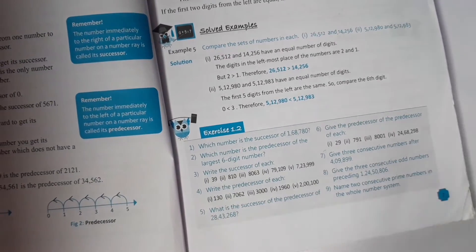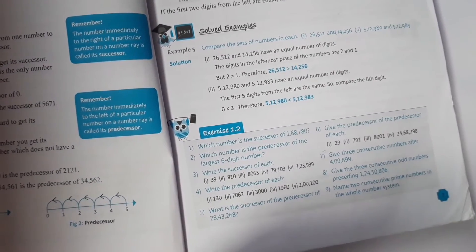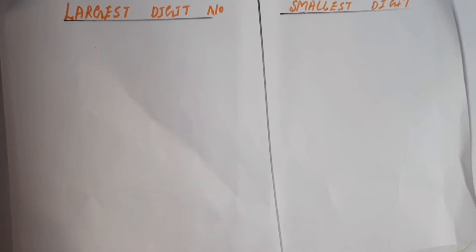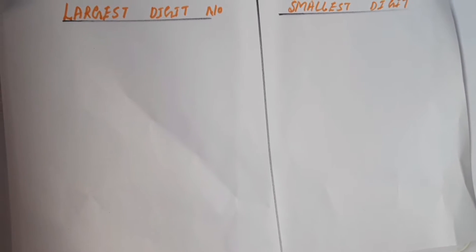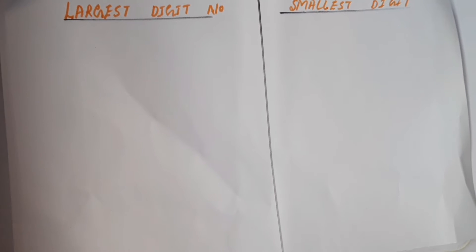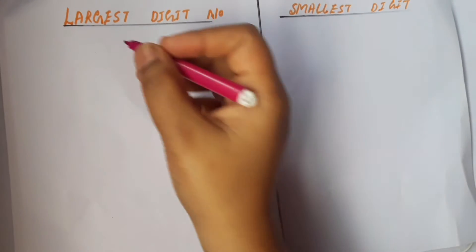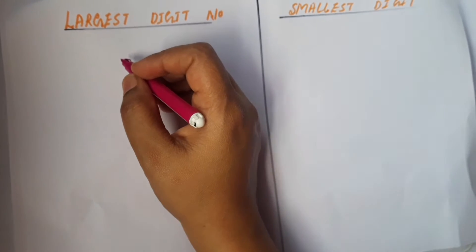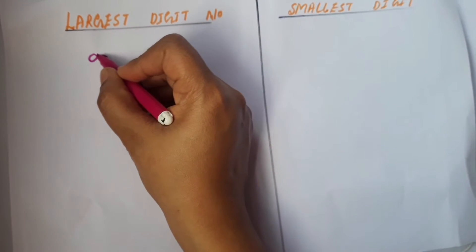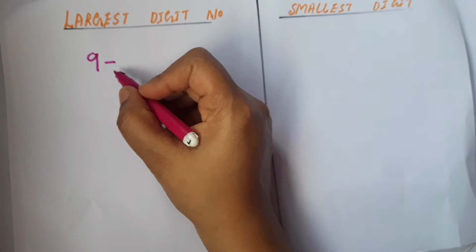Now, we have to check the largest six-digit number. To find the largest or greatest six-digit number, first we have to know how to write the largest digit and smallest digit. For example, the largest nine-digit number and smallest nine-digit number.